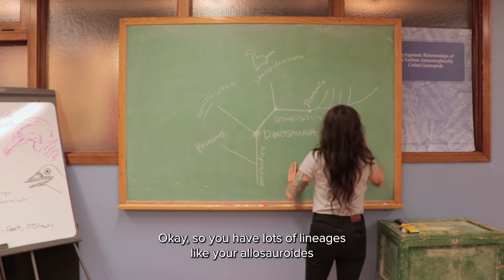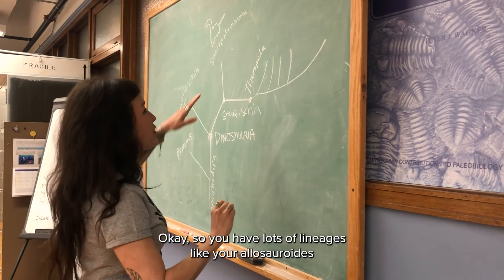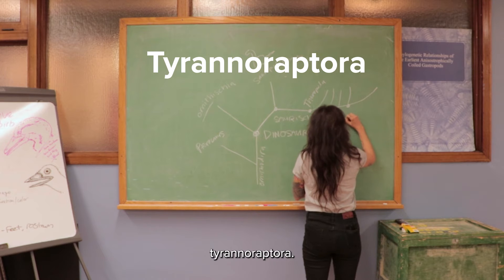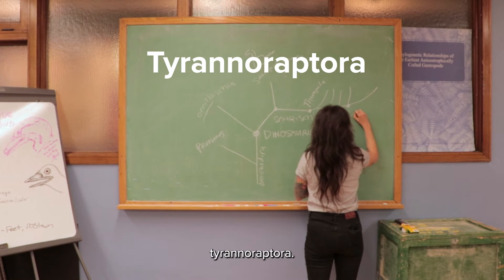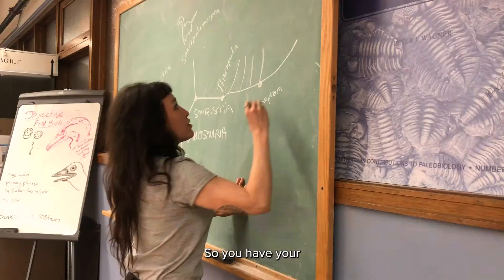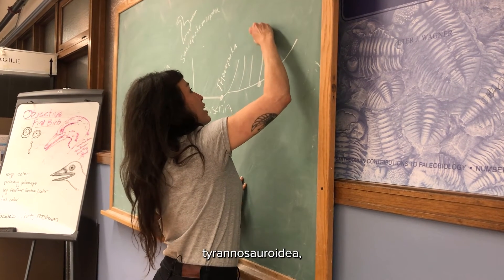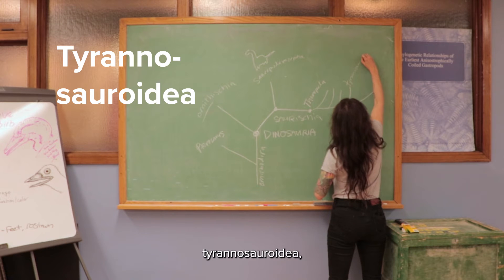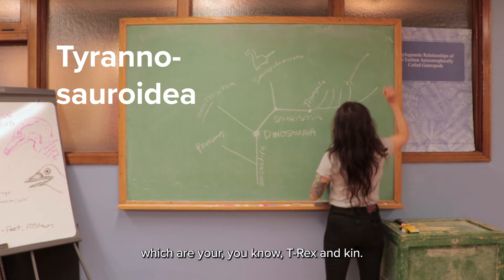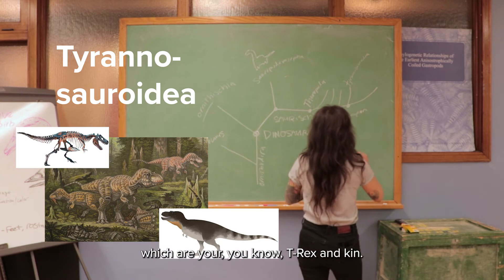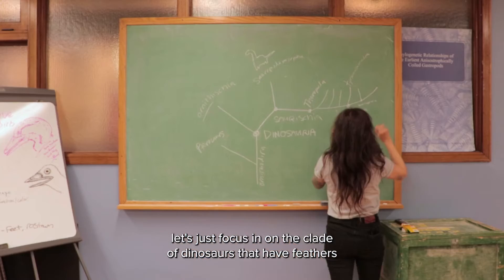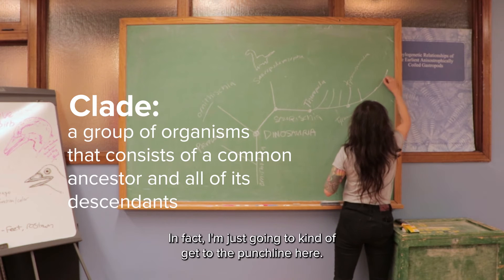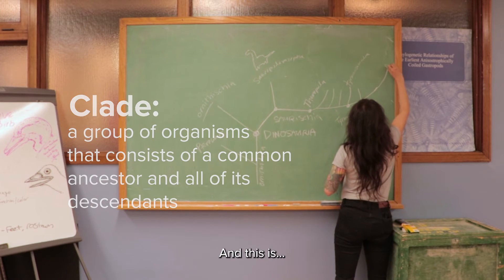You have lots of lineages like your Allosauroids and those kinds of things, but this node we're going to call Tyrannoraptora. You have your Tyrannosauroidea — your T. rex and kin — and then let's focus on the clade of dinosaurs that have feathers like we see in living birds. In fact, this is birds.